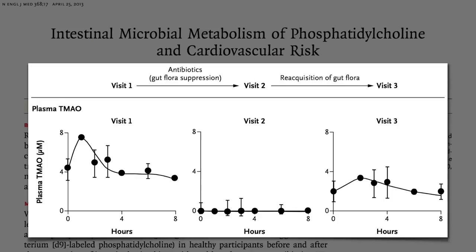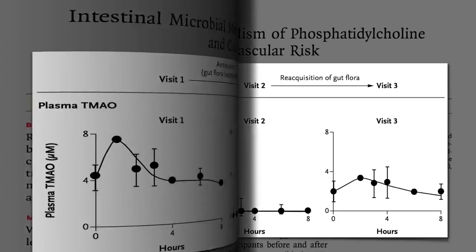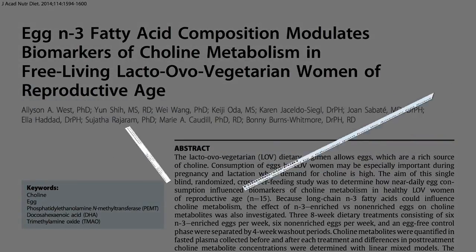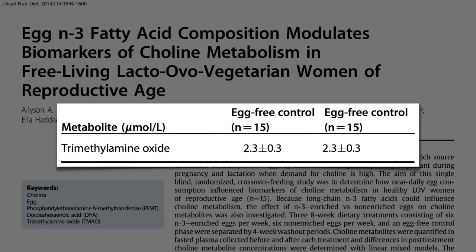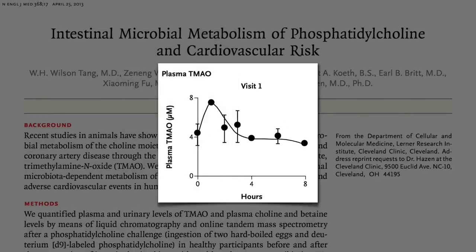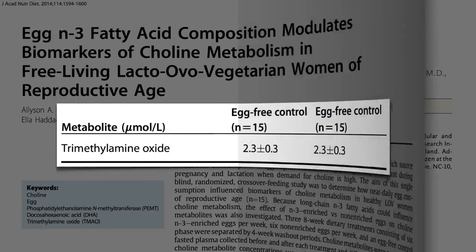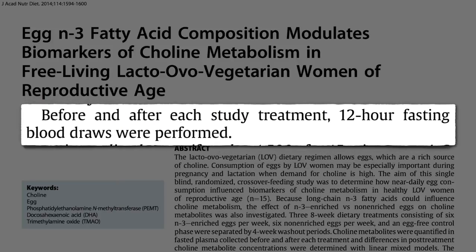These findings did not thrill the egg industry. Imagine you work for the American Egg Board, tasked with designing a study to show no effect of eating nearly an egg a day. How could you rig it to show no difference? If you look at the effect of an egg meal, you get a bump in TMAO levels, but your kidneys are so good at getting rid of this stuff that by hours 4, 6, 8, you're back to baseline. So all you have to do is make sure participants hadn't eaten those eggs in the last 12 hours, and you can show no effect — and get your study published in the Journal of the Academy of Nutrition and Dietetics, and collect your paycheck.